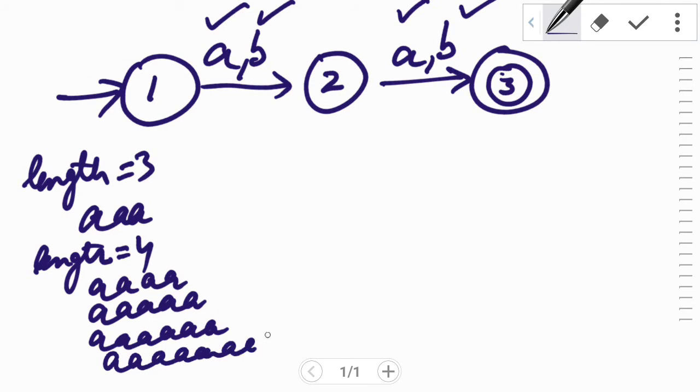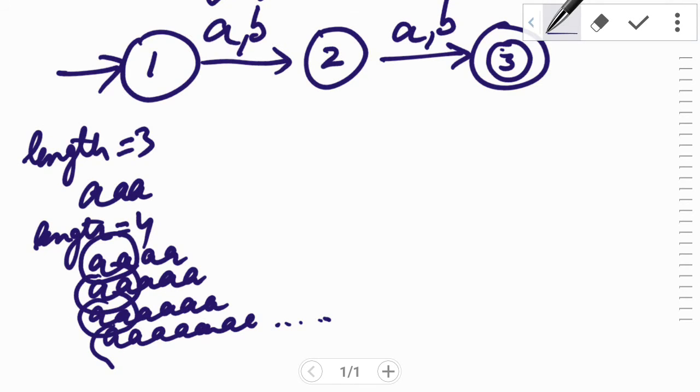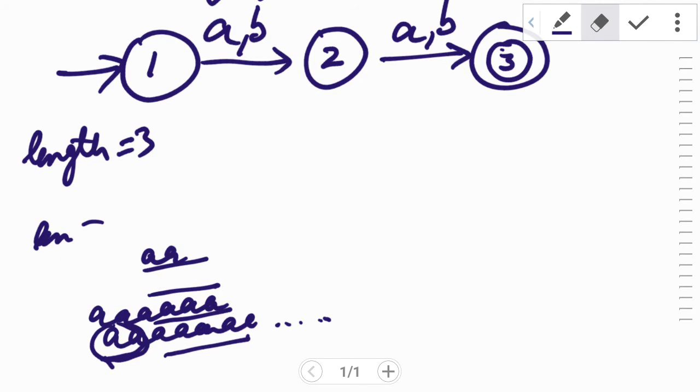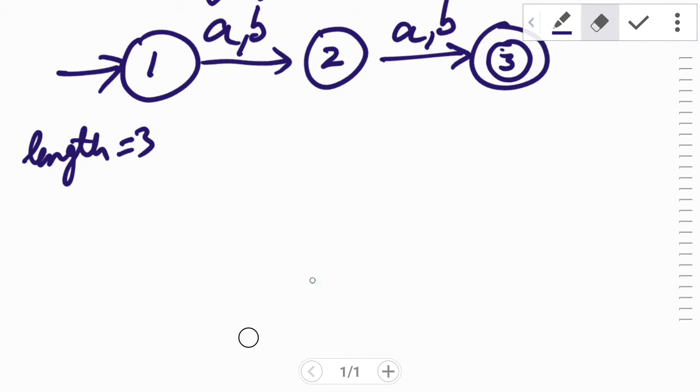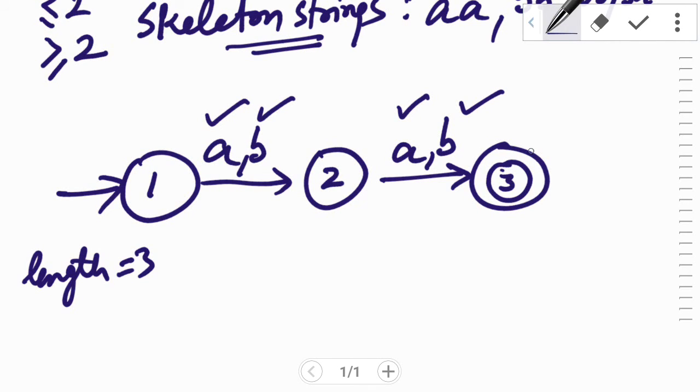7 a's can also be accepted and so on. The thing which I want to point out is that the minimum criteria was that the minimum number of a's should be 2, the minimum length of the string should be 2, which is being fulfilled. After that, no matter what, either a comes or b comes, everything will be accepted. Hence we will put a self loop to the state 3 of input a.